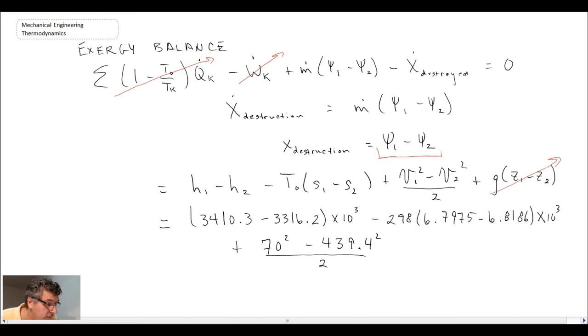So plugging in all of the values what we end up with is exergy destroyed is equal to 6.30 kilojoules per kilogram. So that's the answer to the third part of the problem using the second approach.